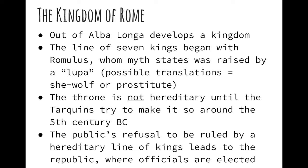The story says that these twins were raised by a lupa, which is the Latin word for she-wolf, but might also have meant prostitute, which is a far more feasible, though somewhat less romantic way to look at the story. Eventually, one family of Romans, the Tarquins, tried to make the throne hereditary, but the people weren't willing to allow that much power to lie with one family. A whole string of events leads to the removal of the kings and the instatement of elected officials.